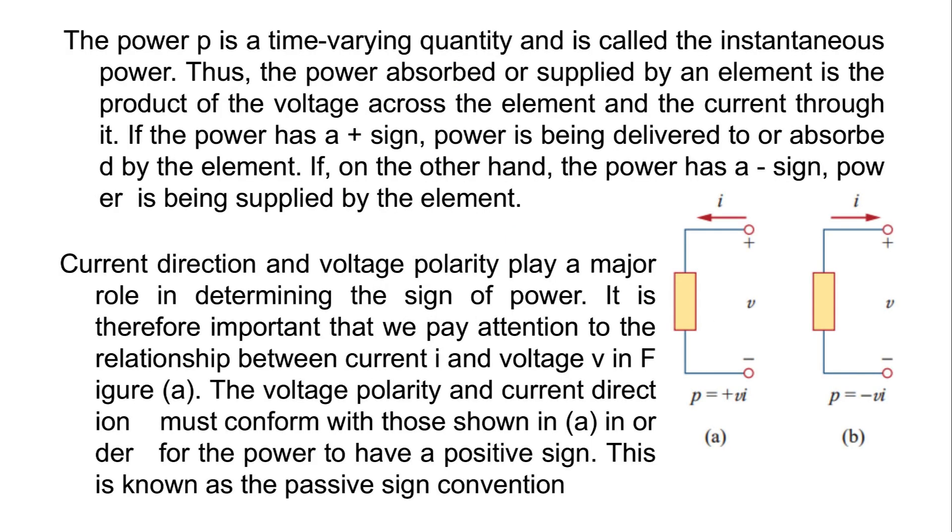The power p is a time-varying quantity and is called the instantaneous power. Thus, the power absorbed or supplied by an element is the product of the voltage across the element and the current through it.